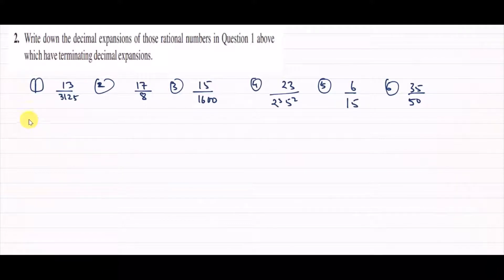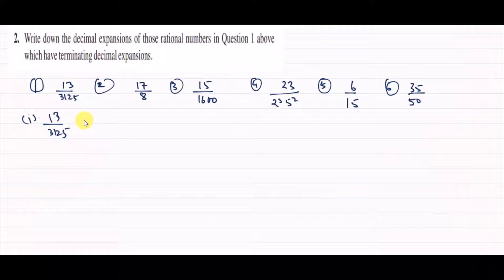The first question we will solve is 13 upon 3125. If you go to divide it directly, it will take a lot of time. It is better that you factorize it first. So we factorize the denominator: 3125 is 5 to the power of 5. So we have 13 upon 5 to the power 5. We have done this first.